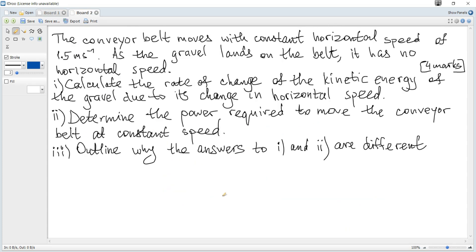Next. The conveyor belt moves with constant horizontal speed of 1.5 meters per second. As the gravel lands on the belt, it has no horizontal speed. Calculate the rate of change of the kinetic energy of the gravel due to its change in horizontal speed. Rate of change of kinetic energy divided by time to get change in kinetic per unit time. If we consider time to be equal to one second.